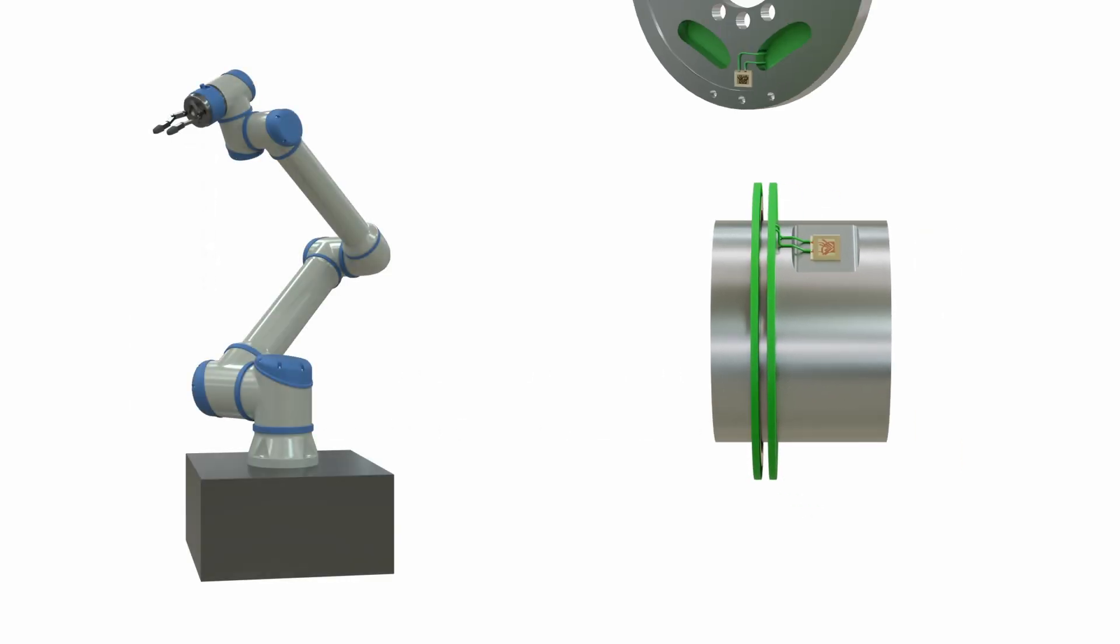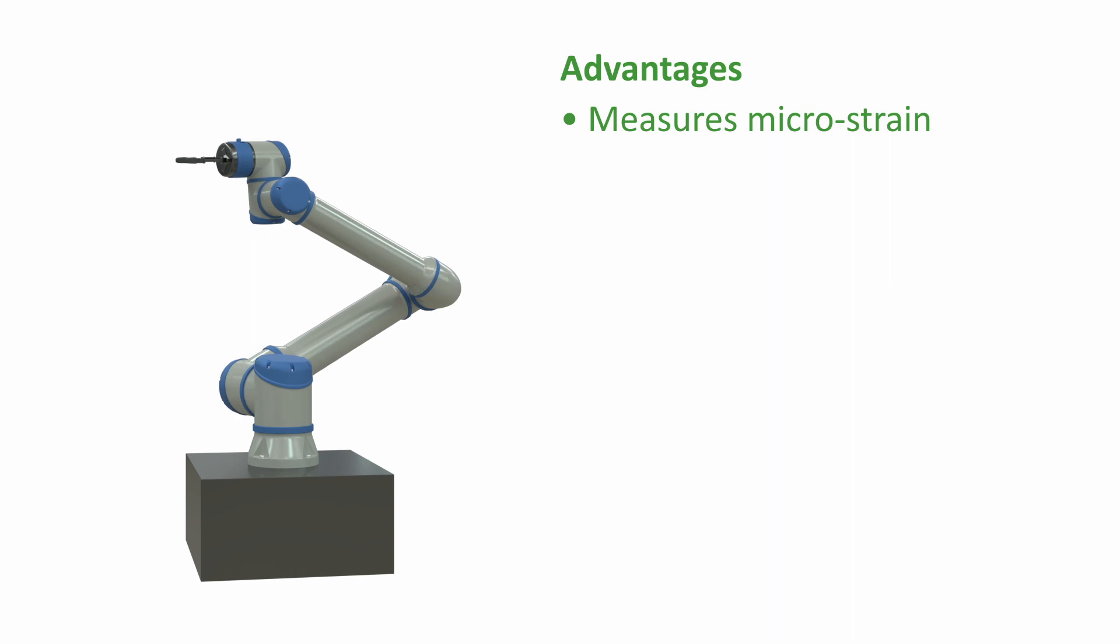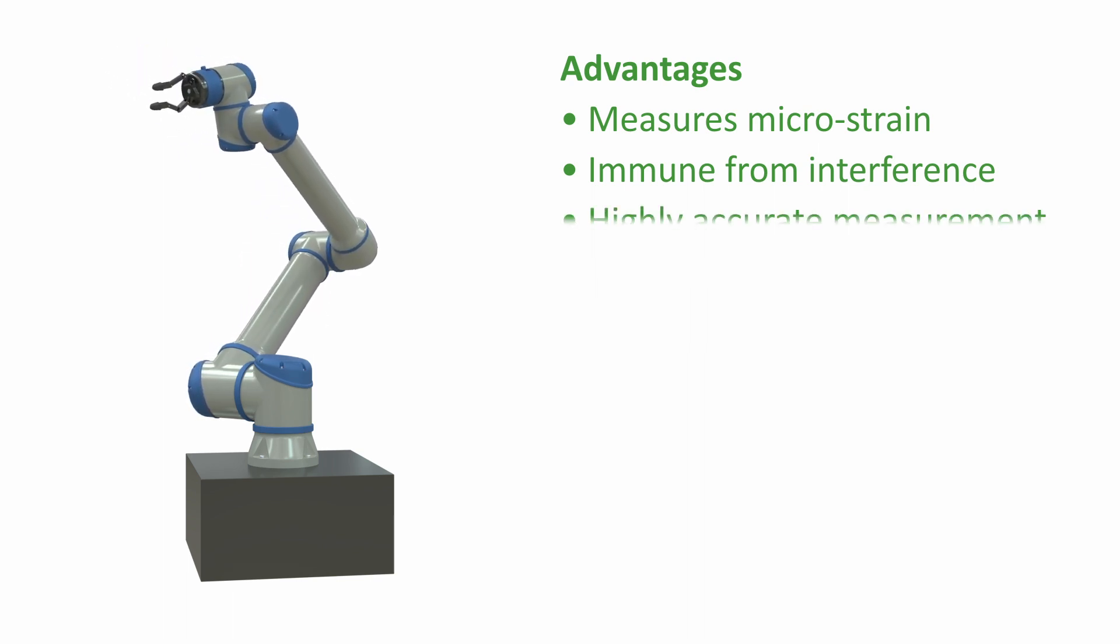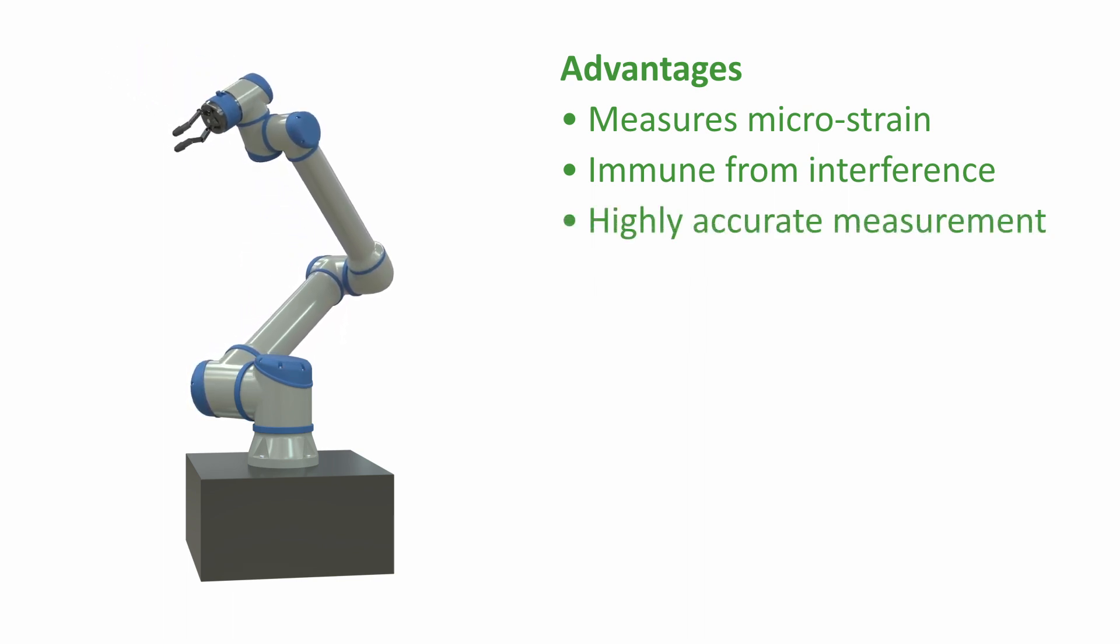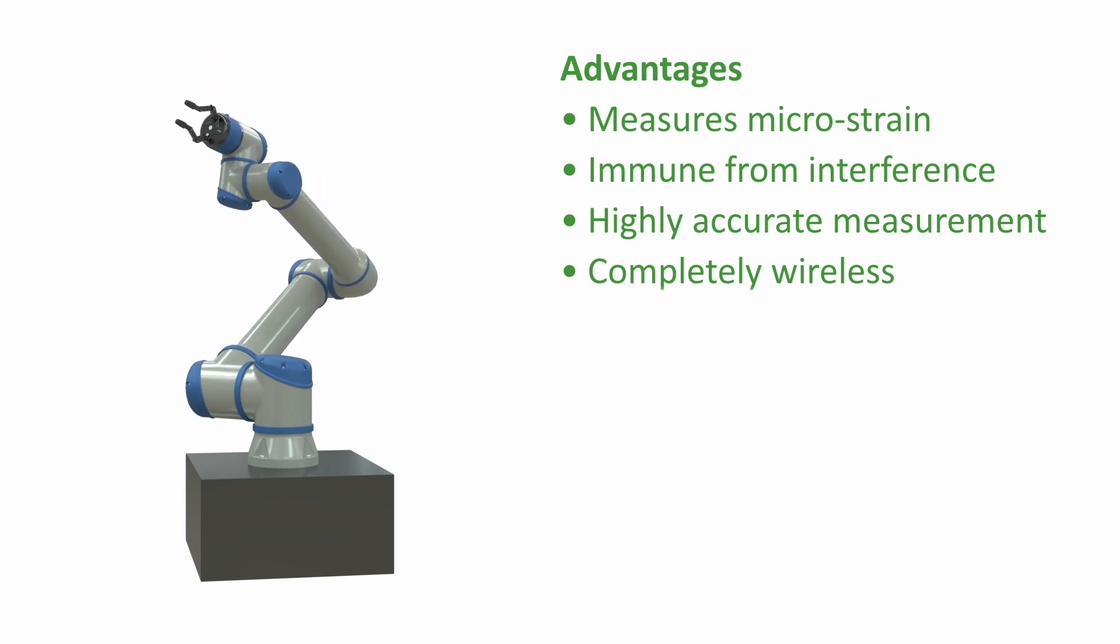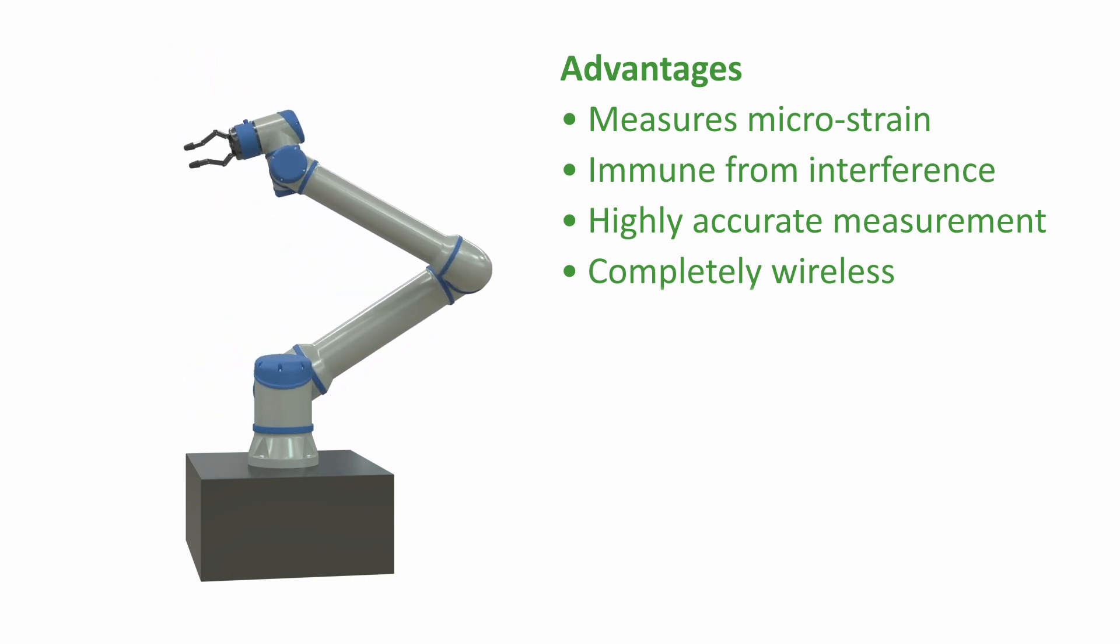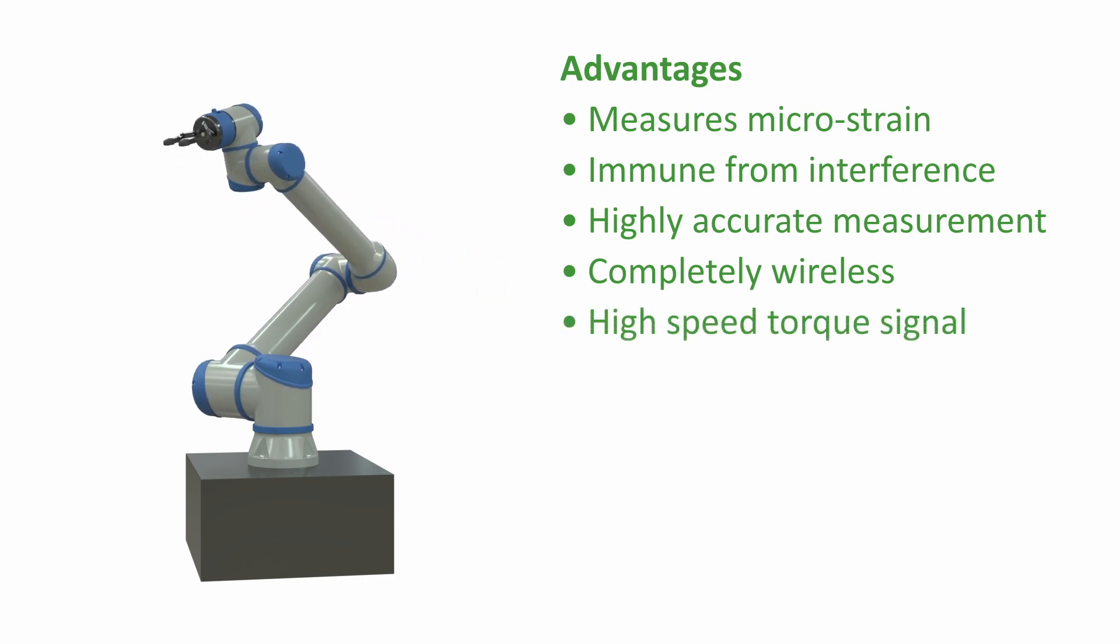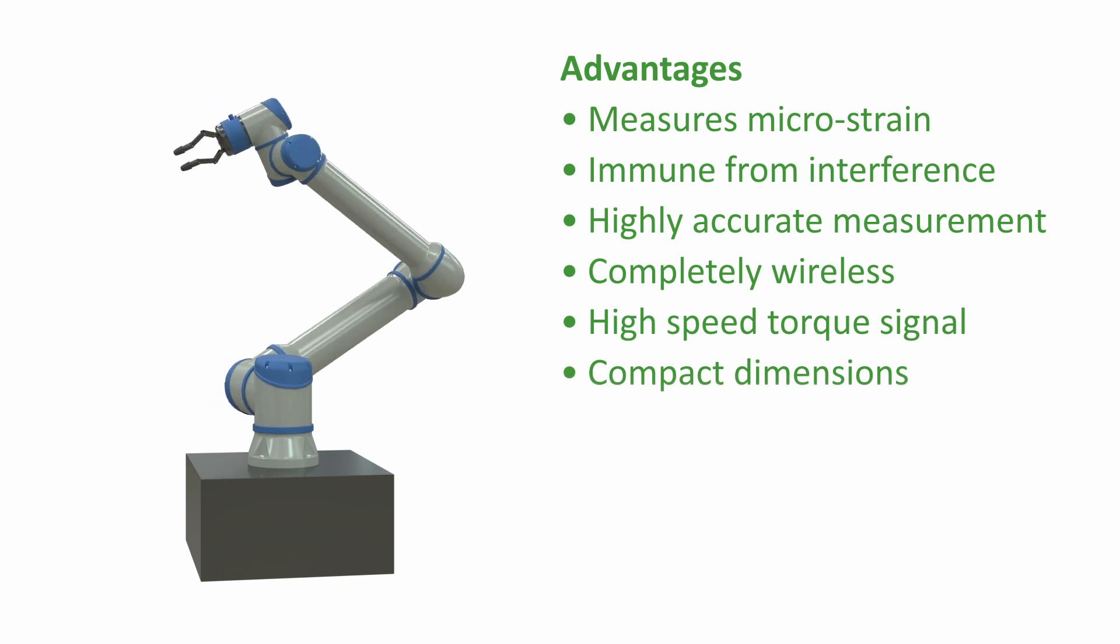The advantages of this approach are: it measures microstrain so the shaft or joint can be very stiff; it is immune to background RF or magnetic interference; it is more accurate than displacement sensors with plus or minus one percent accuracy achievable in a typical application; it can be completely wireless with small, light, and passive components only on the rotating shaft; it has a high speed torque signal suitable for use in control systems; and compact dimensions that can be easily packaged into a complex system.